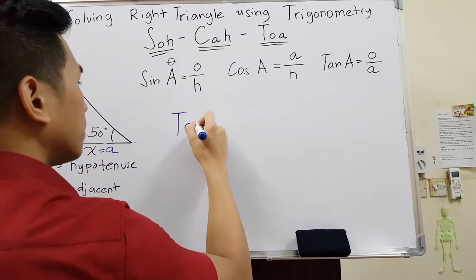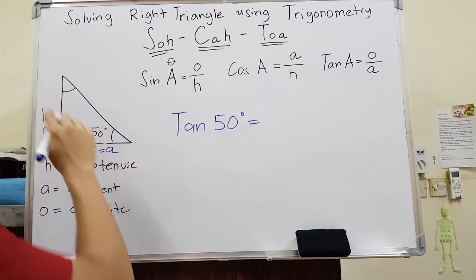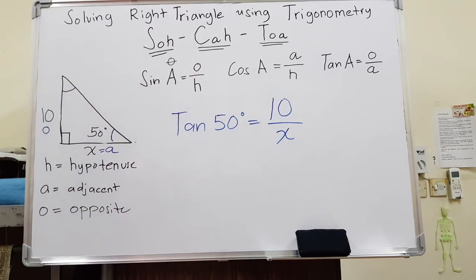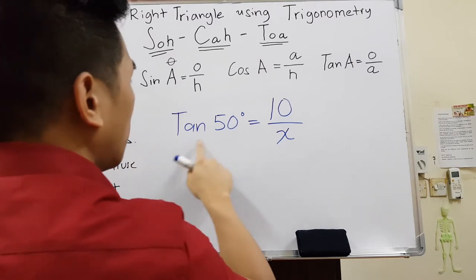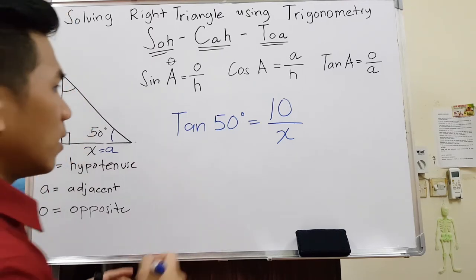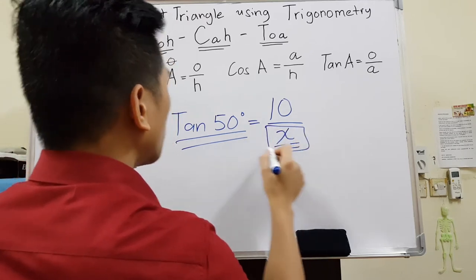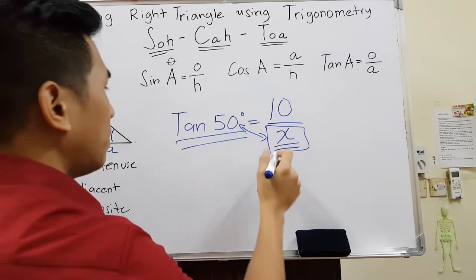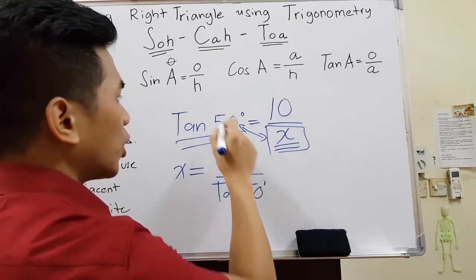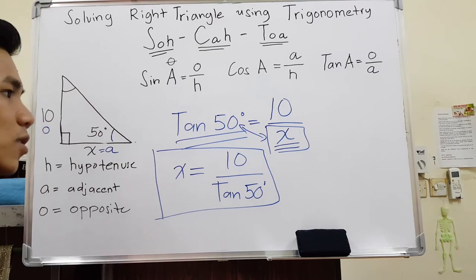Write: tangent of 50 degrees equals 10 over X. Here's a shortcut for when the unknown is in the denominator — you can simply switch their positions. So X equals 10 over tangent of 50 degrees. This works because cross-multiplying and dividing both sides gives the same result.